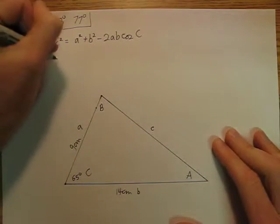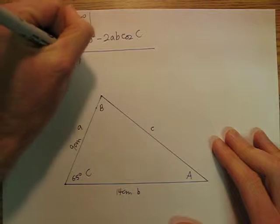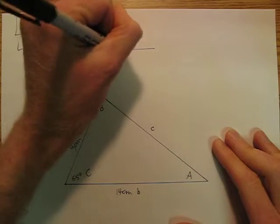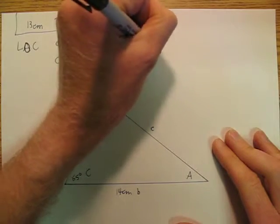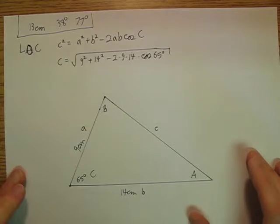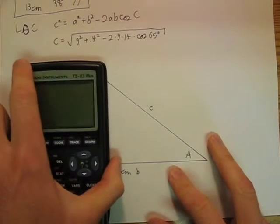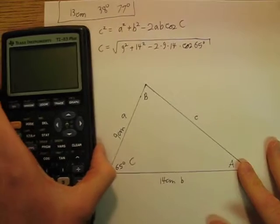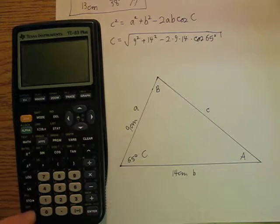So I'm going to have c is equal to the square root of 9 squared plus 14 squared minus 2 times 9 times 14 times cosine 65 degrees. Now, here's the thing. Everybody wants to do this in a messed up way on their calculator. They want to just sort of go and do it step by step. What's 9 squared? What's 14 squared? I want to do it all in one shot. And so I'm going to show you how to do it all in one shot.